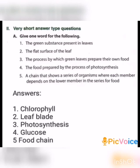Next, very short answer type questions. Give one word for the following. First one: The green substance present in leaves. The answer is Chlorophyll. Second one: The flat surface of the leaf. The answer is Leaf blade. Third one: The process by which green leaves prepare their own food. The answer is Photosynthesis.